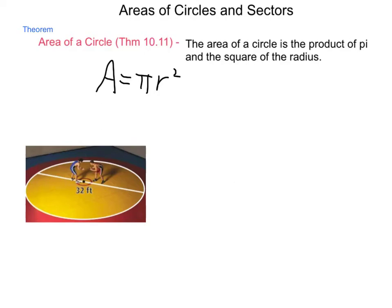Well, if you need to know, for instance, in sports, the area of the circle that wrestlers do their work in, the diameter of that circle is 32 feet. What would the area be?